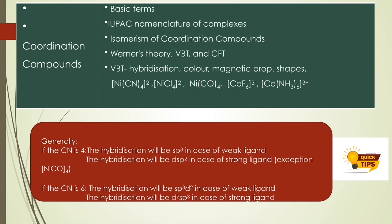A shortcut tip for hybridization: if the coordination number is 4 and the ligand is weak, the hybridization will be sp³. If the ligand is strong, the hybridization will be dsp². If coordination number is 6, the hybridization will be sp³d² for a weak ligand and d²sp³ for a strong ligand. This is a general rule, but there are exceptions — for example, Ni(CO)₄ is sp³ even though CO is a strong ligand.